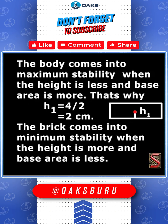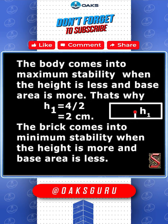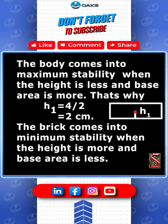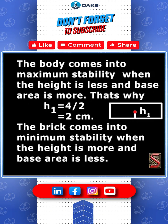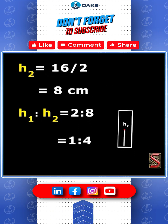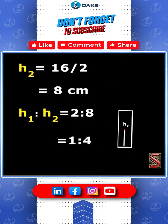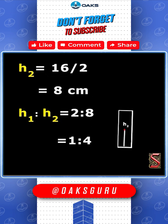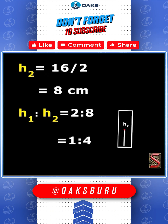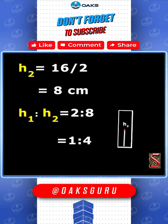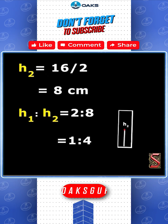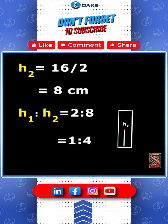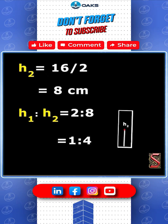The brick comes into minimum stability when the height is more and base area is less. So H2 is equal to 16 divided by 2, that is equal to 8 cm. H1 to H2 is equal to 2 is to 8, that is equal to 1 is to 4.